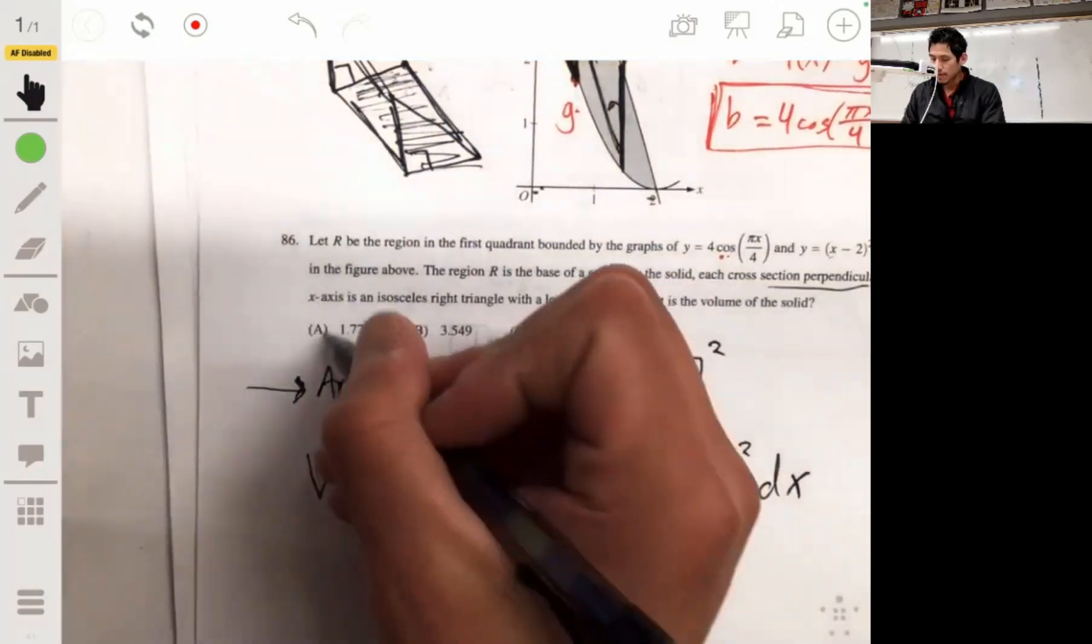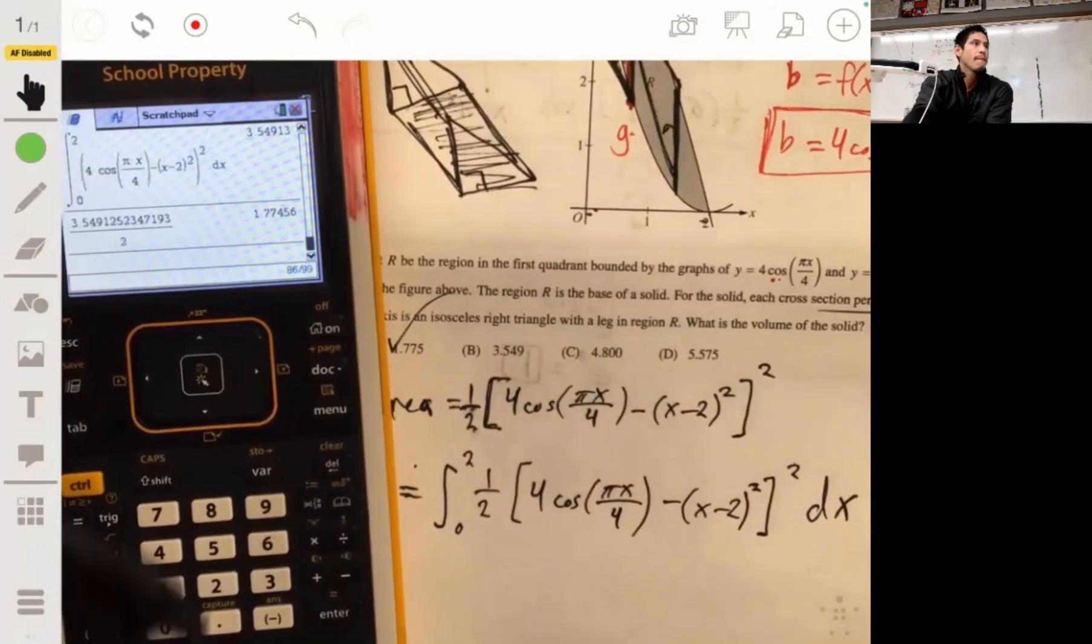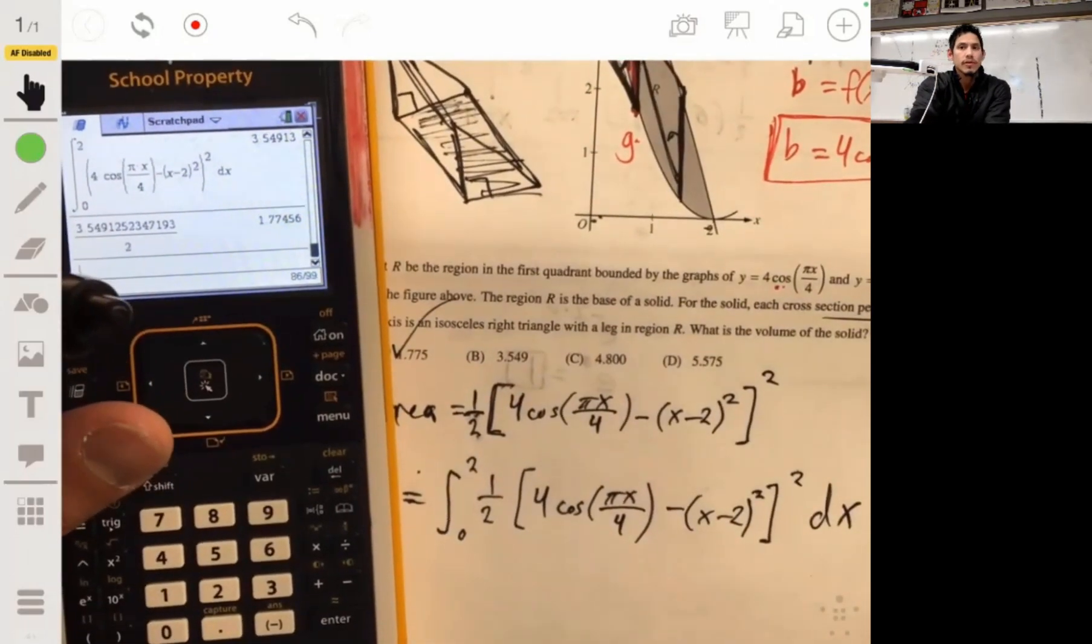And then that divided by 2 because times that one half. And there we go, 1.775-ish. The answer's A. Alright, cool, I didn't mess up on that. Alright, I hope that helps. Good luck.